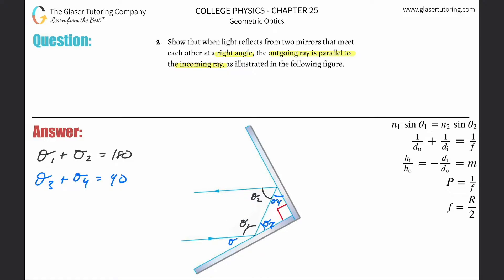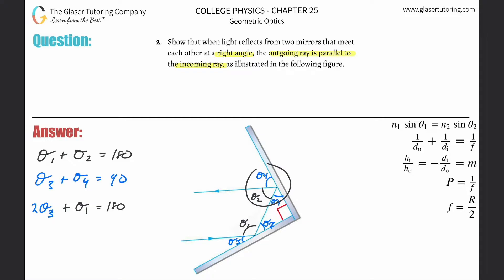I'm going to plug in theta three over here and theta four on this side. We also know that this is a straight line and the total angle has to be 180 degrees — in other words, two theta threes plus theta one must equal 180 degrees. So: two theta threes plus theta one equals 180 degrees. The same thing happens on the second mirror: two theta fours plus theta two equals 180 degrees.